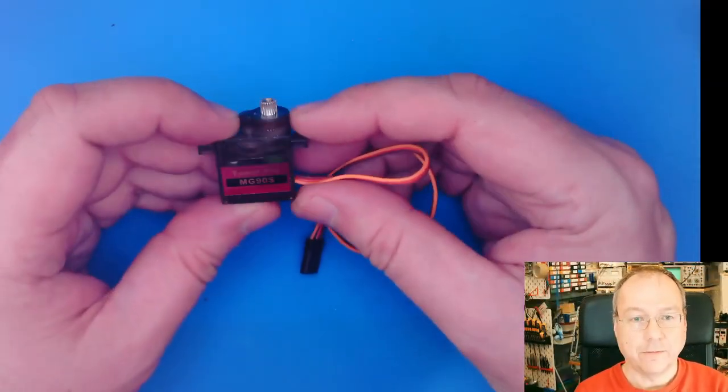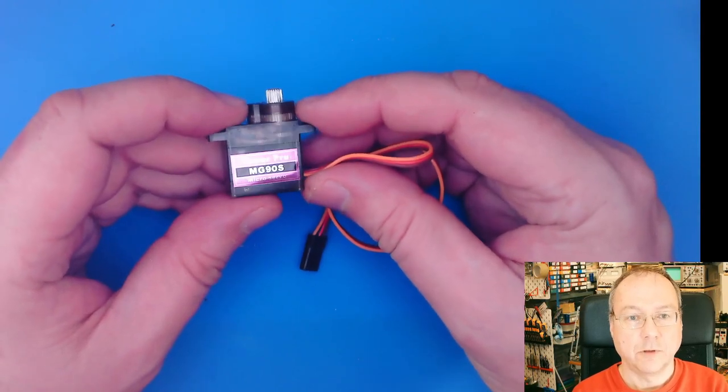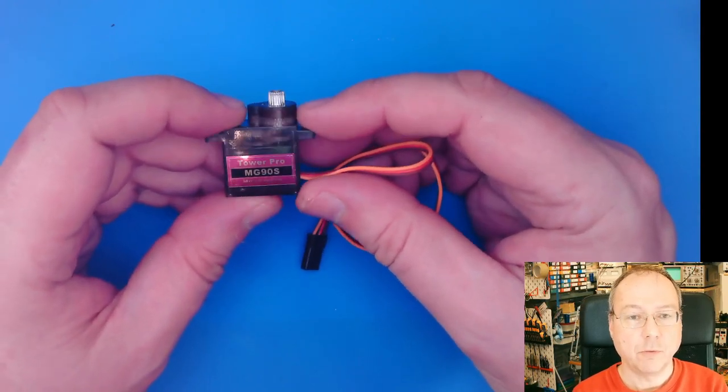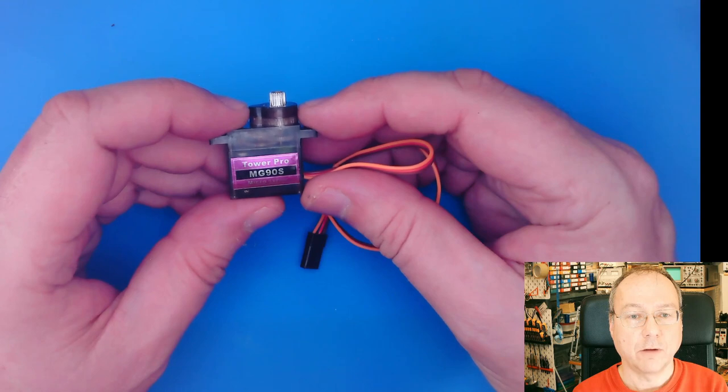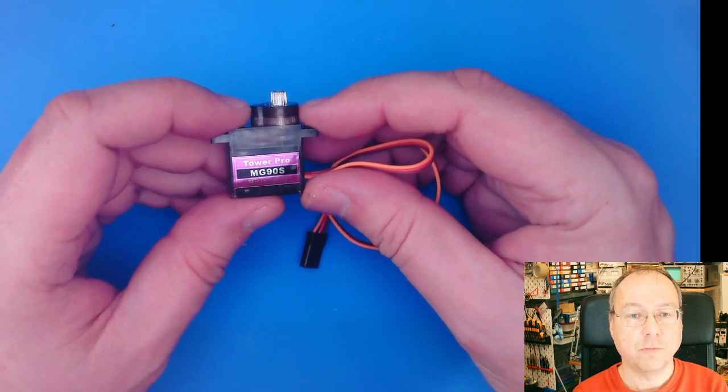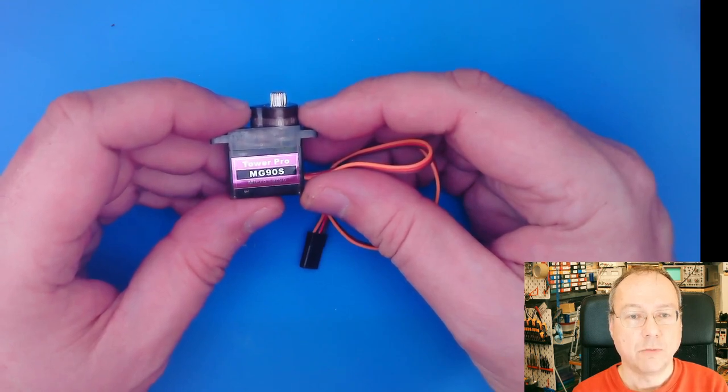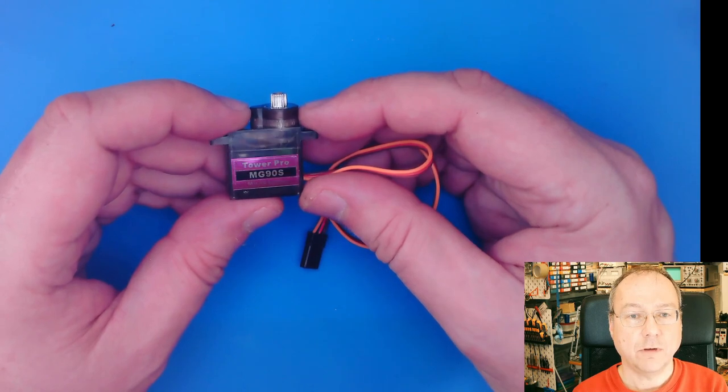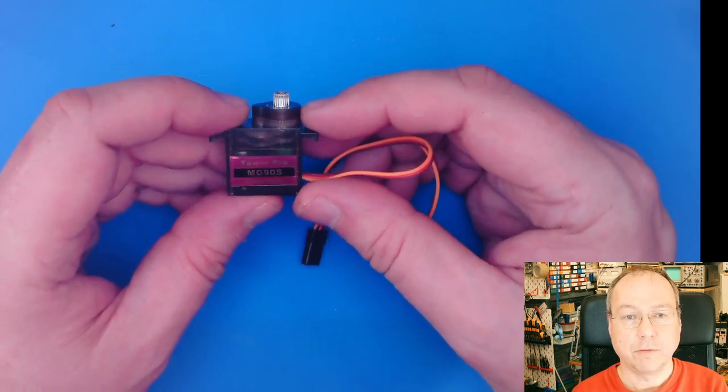The servo motors in our project boxes look like this. They are a smaller version of servo motors called Tower Pro MG90S, which is considered a brand name in the field of servo motors. The ones we have actually have metal gears as I mentioned before, and this is a sign of quality.